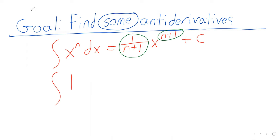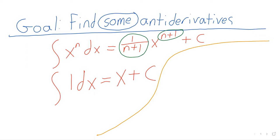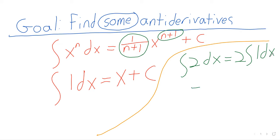The anti-derivative of 1 is x. This same rule lets us deal with any constant. The anti-derivative of 2, for example, is 2 times the anti-derivative of 1, which is 2x plus a constant of integration.